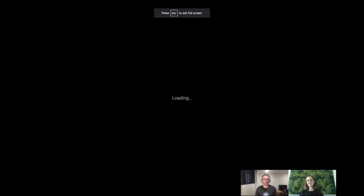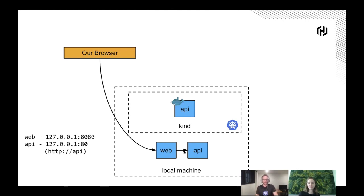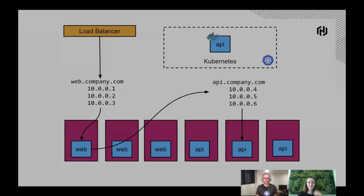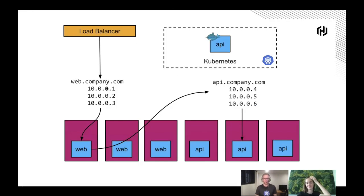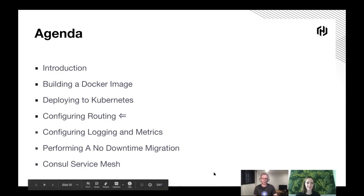So far we have web running and talking to API on our VM MacBook, and we've now deployed API into Kubernetes — put it in a Docker image, written the YAML. In a real VM setup, nothing changes on the VM side, but now API is also deployed in the Kubernetes cluster. The next question is: how do we actually route requests over to that? That's what Irina will cover next.